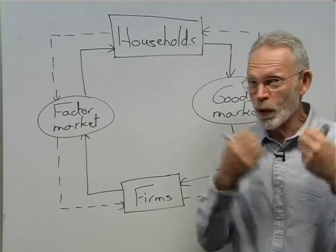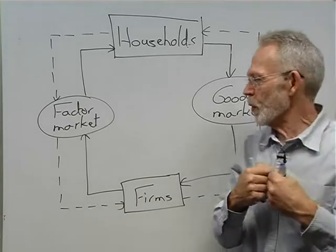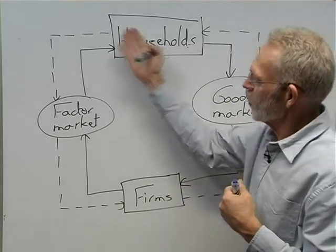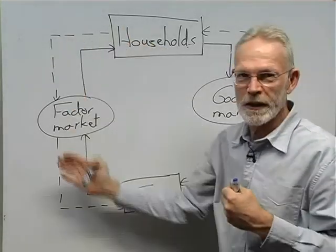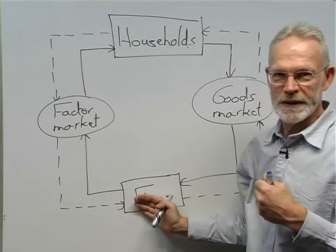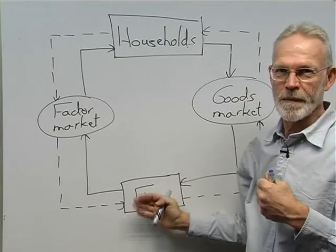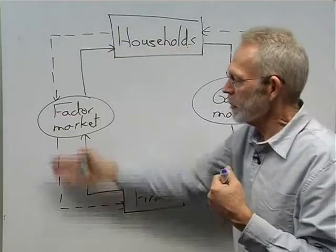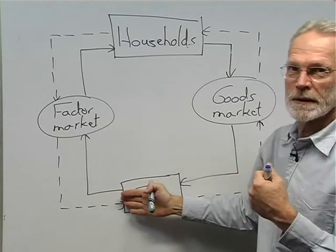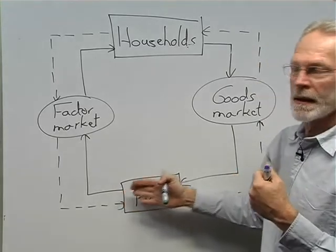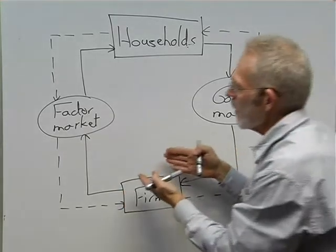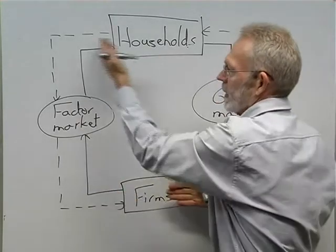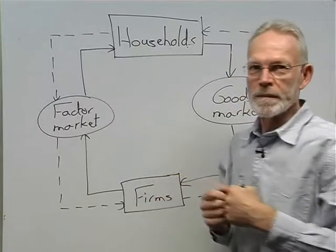But in order to produce more, firms need to employ more of the factors of production. If they employ more of the factors of production, households will receive more income.